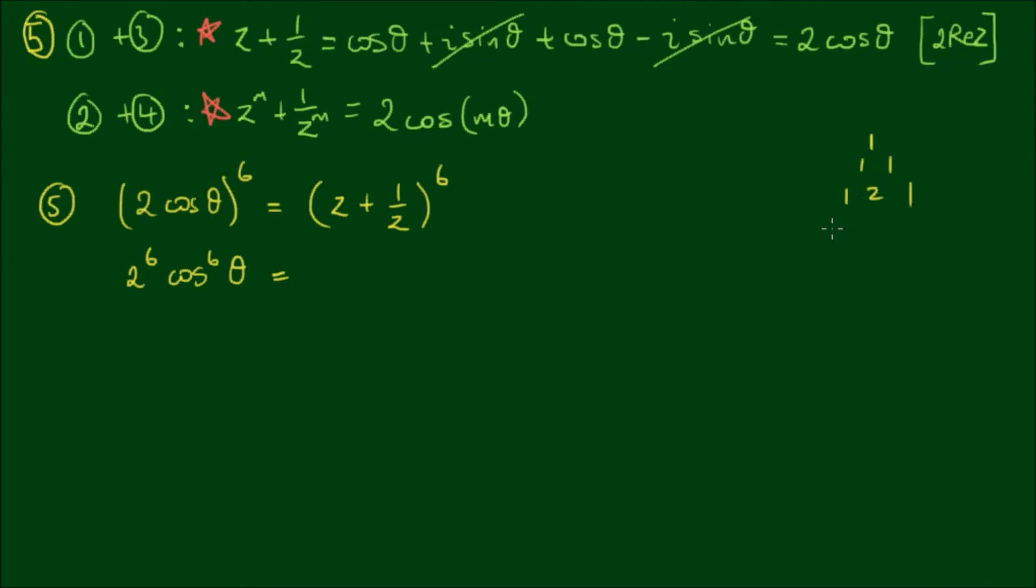When we square it we have 1, 2, 1. When we cube it we have the coefficients 1, 3, 3, 1. When we quadruple it we have 1, 4, 6, 4, 1. To the 5th power we have 1, 5, 10, 10, 5, 1. And to the 6th power the coefficients are going to be 1, 6, 15, 20, 15, 6, 1.